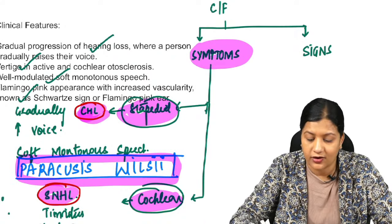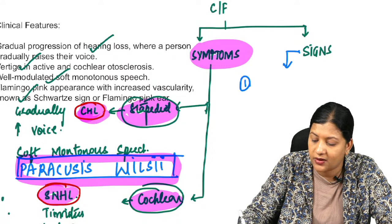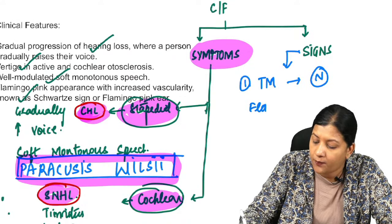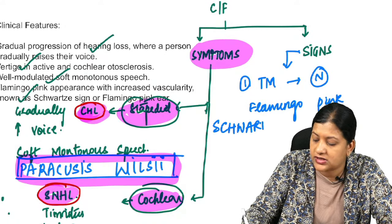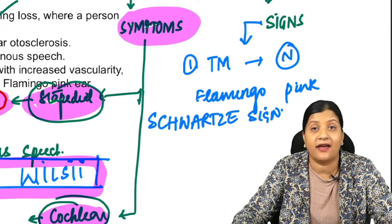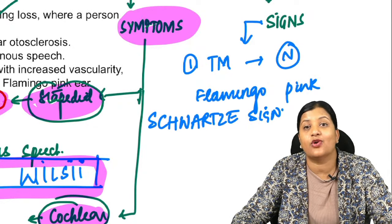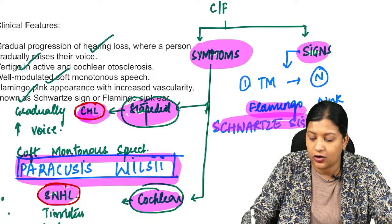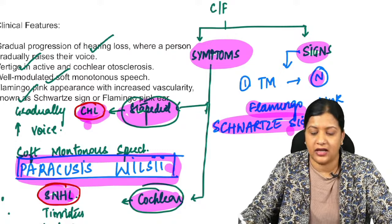For signs in otosclerosis, the tympanic membrane will appear normal, but through it you can see a flamingo pink appearance of the promontory — this sign is called Schwartz sign. Signs are mentioned only for the stapedial type, as cochlear type has no specific visible external or tympanic signs. Also note that the tympanic membrane shows restricted mobility. Writing the tympanic membrane is normal with flamingo pink appearance of promontory seen through it — Schwartz sign — along with restricted mobility will yield your two marks for clinical features.